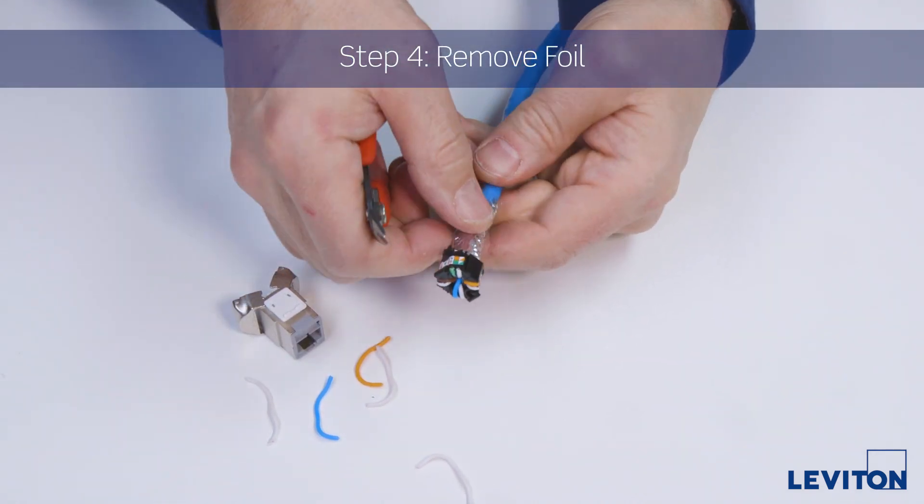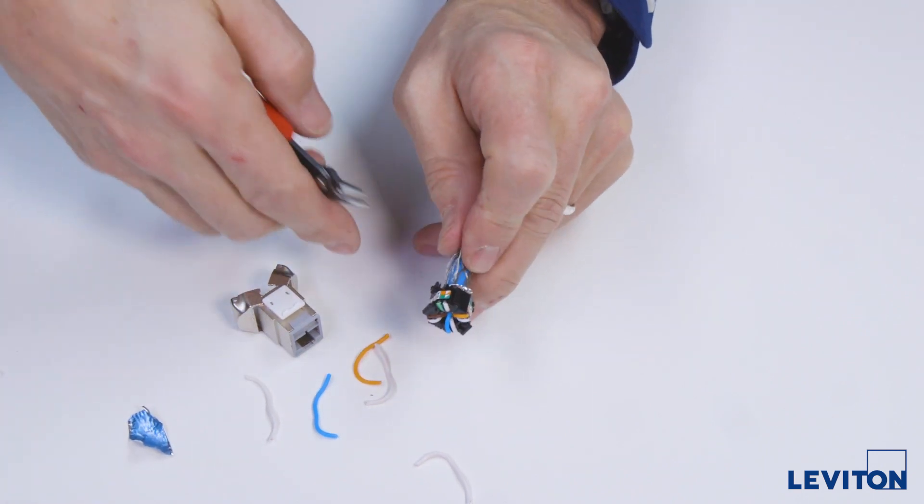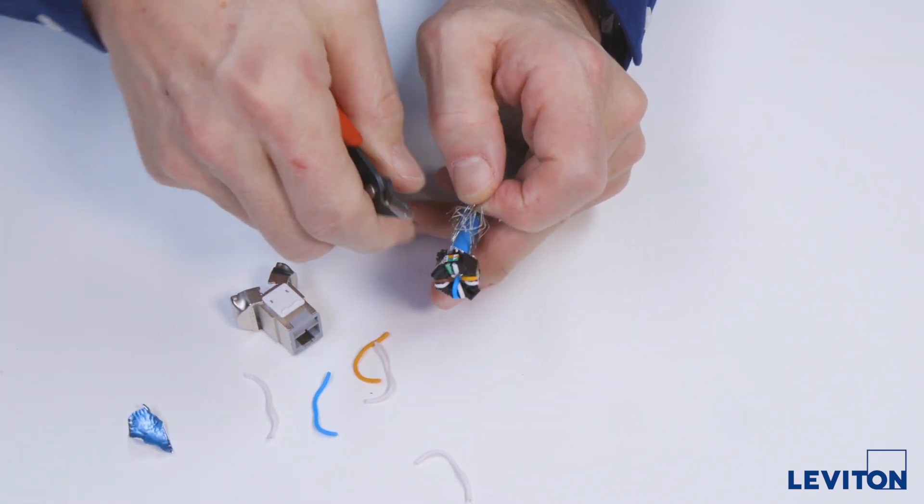Now, nip the foil at the rear of the wire manager with your flush cutters and tear it away. Then cut away the mesh braid.